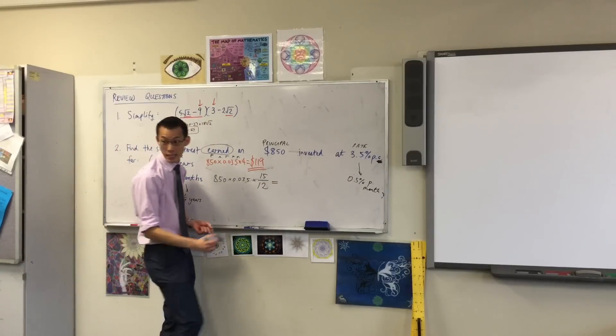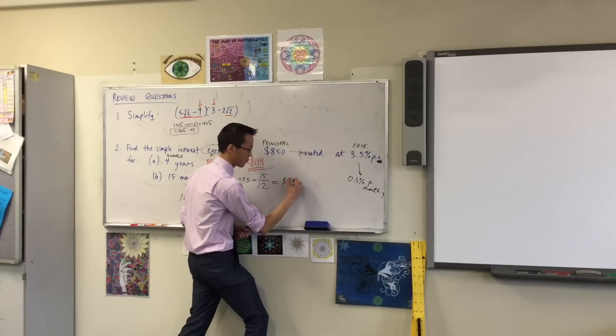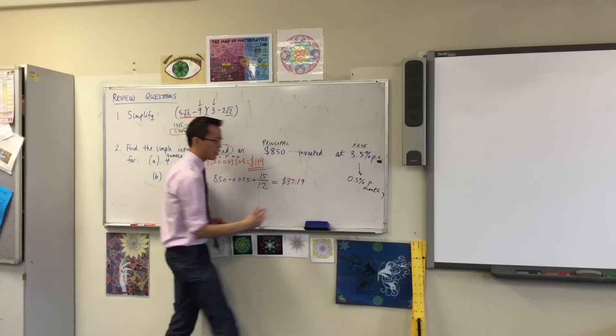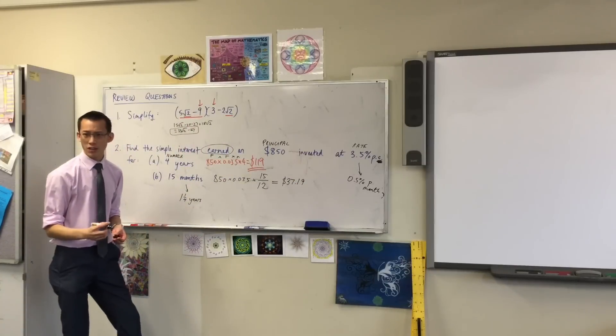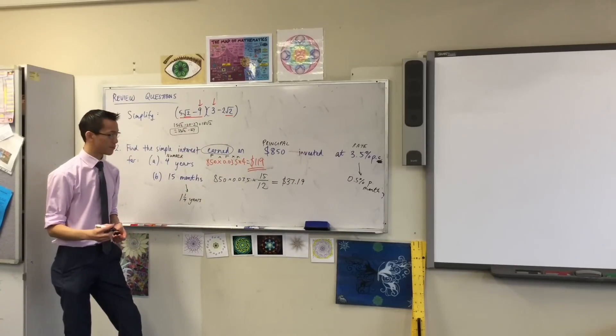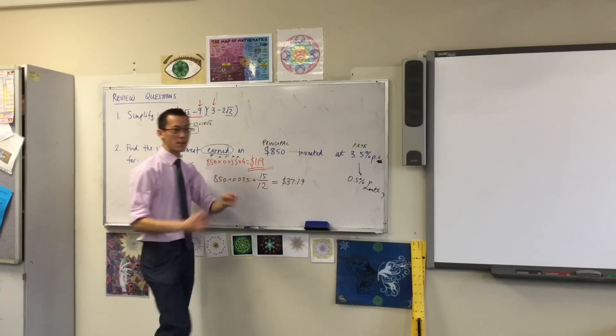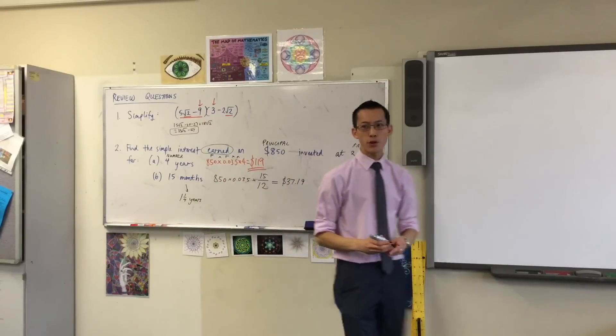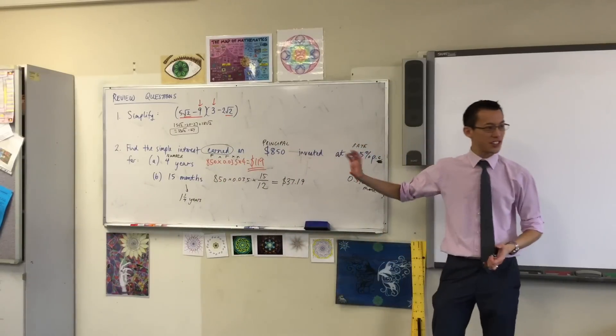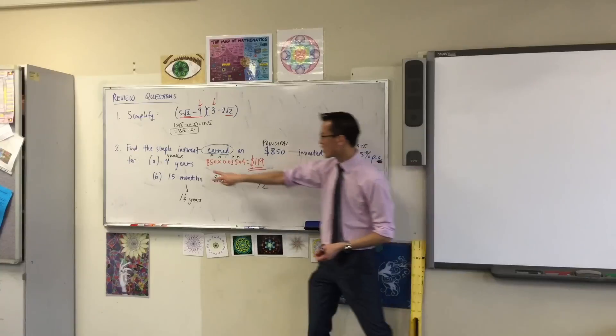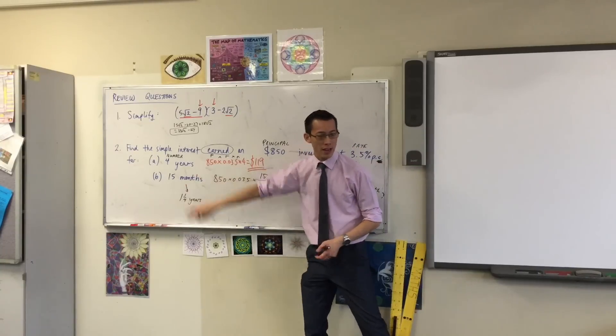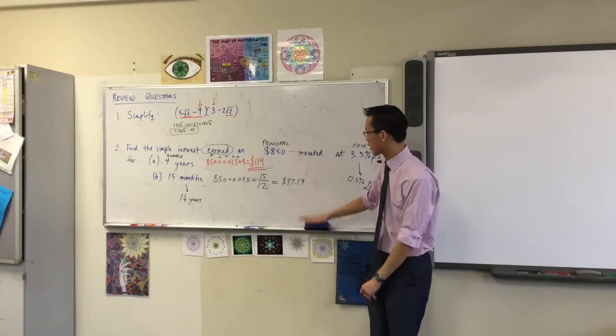So I got $37. Did you have to round that? Yeah, yeah. Great, so we rounded to the nearest cent, which is perfect. Now, just before you leave, you'll often get questions like this where lots of things are the same and then you put this slight modification.